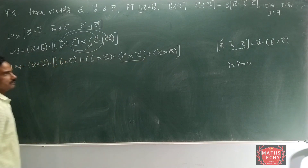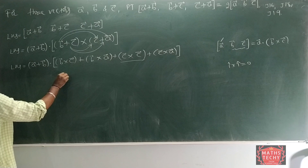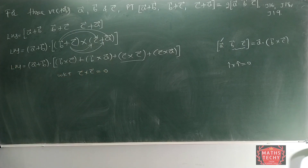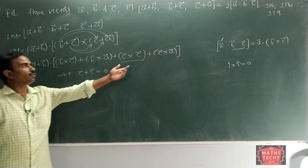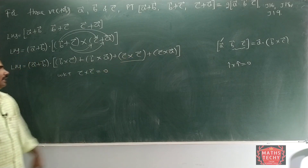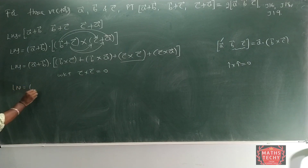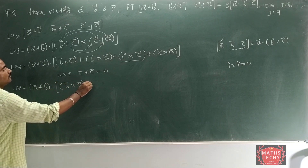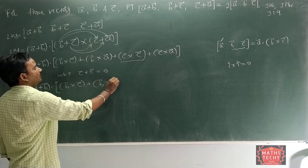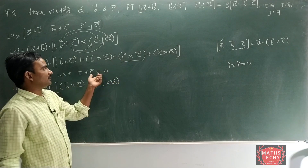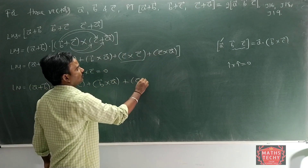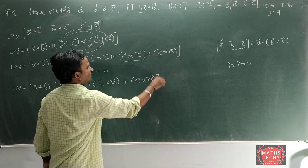So the zero terms are removed. Vector C cross vector C is equal to 0, so don't write it — keep it 0 and remove it. Now we can write: (A+B) dot [(B cross C) + (B cross A) + (C cross A)]. Since B cross B and C cross C equal zero, those terms drop out.